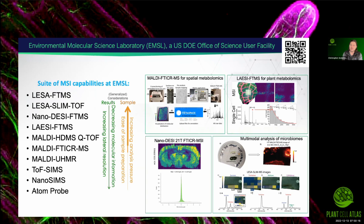I'm at the Environmental Molecular Science Laboratory, which is a Department of Energy user facility located on the campus of PNNL. Since EMSL's mission is in part to lead molecular-level discoveries for the DOE that translate to predictive understanding for national energy and environmental challenges, we have a suite of tools that can address these challenges. We're one of two DOE-BER user facilities, the other being the JGI. If you're interested in working with EMSL, I'll have a link at the end of the talk.